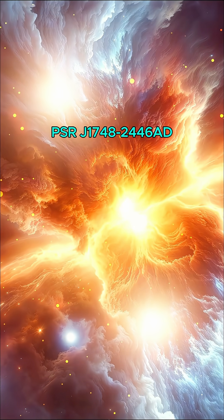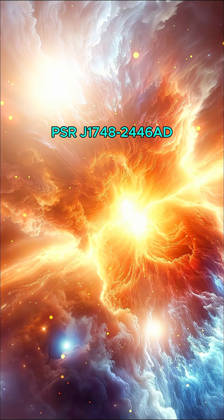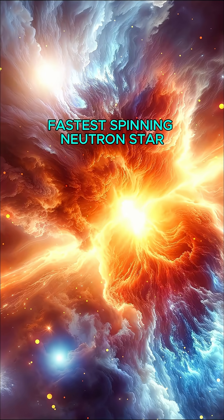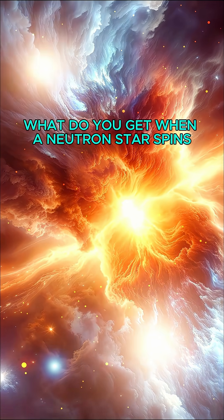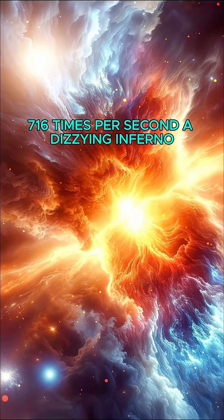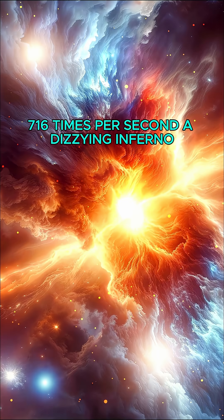Number 5: PSR J1748-2446ad - Fastest Spinning Neutron Star. What do you get when a neutron star spins 716 times per second? A dizzying inferno.